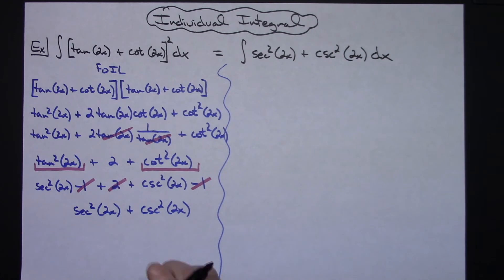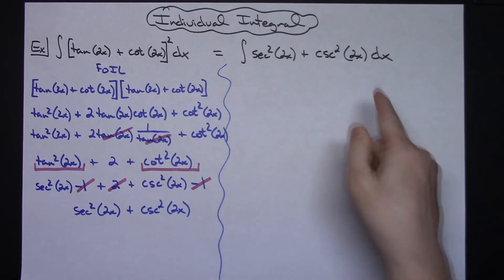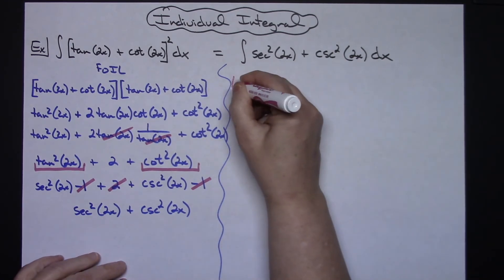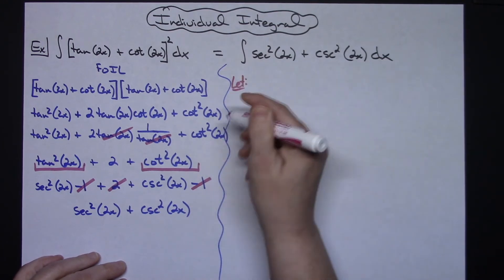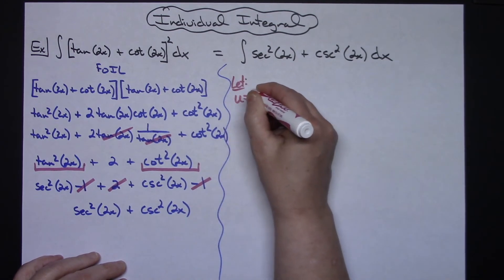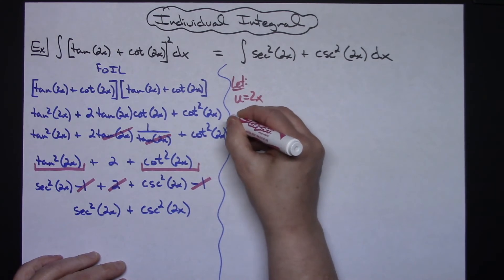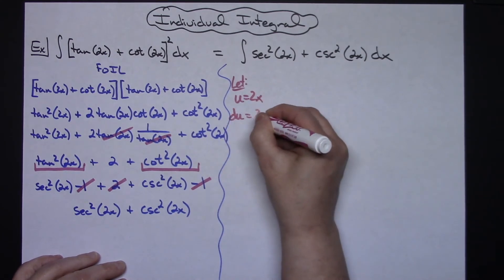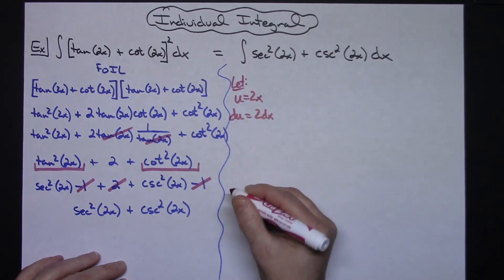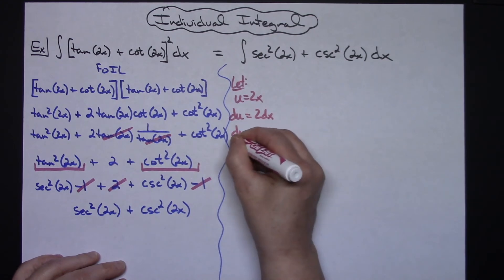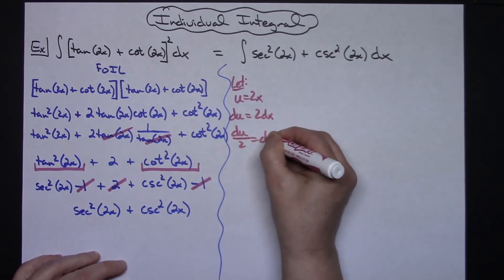Alright, now at this point hopefully you're seeing it's going to be an obvious u substitution here. So we're going to let our u be our inside function. So u is going to be 2x. I'm going to take the derivative of both sides. du equals 2 dx and if I go ahead and solve for dx I'll have a du over 2 equals dx.